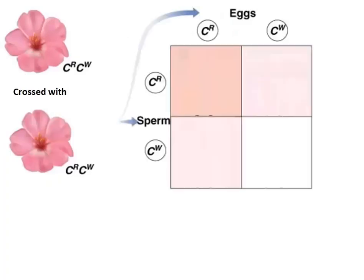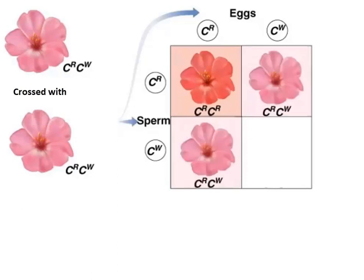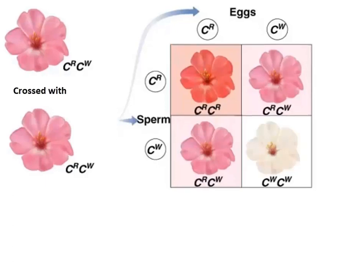We'll set up our Punnett square and fill it in. So far we've got one quarter of them appearing to be red, and half of them are pink. Finishing it off, we get one white. So once we fill in this Punnett square — with the F1 generation, when two pink flowers are crossed — you're going to get one quarter red, half pink, and one quarter white.